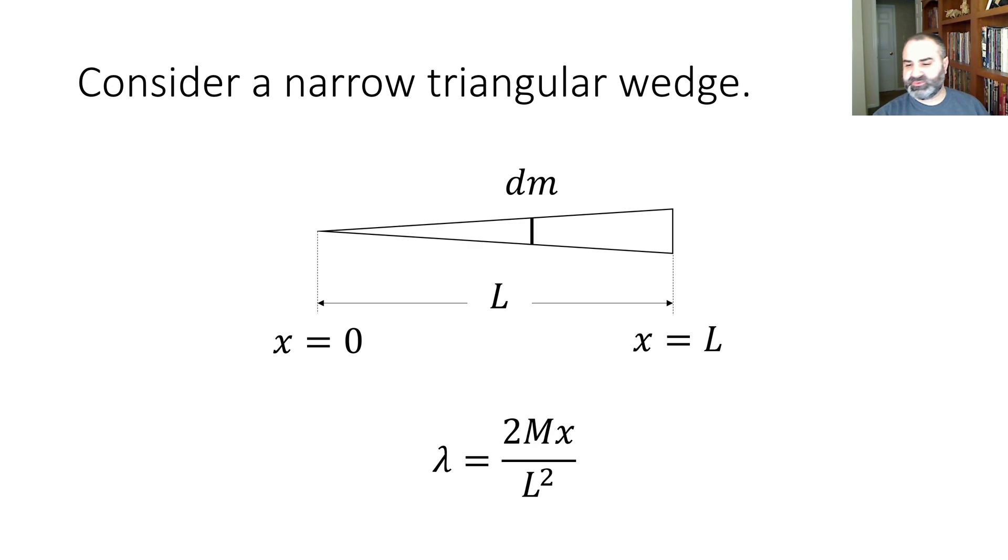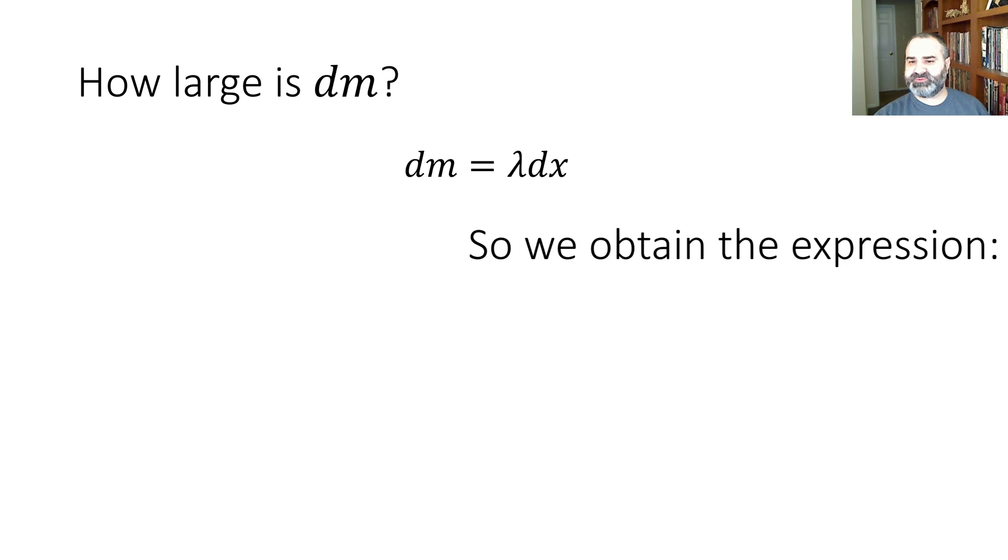So what's dm look like? dm is simply going to be the mass per unit length times the length of that little segment. And so dm is lambda dx. That gives us the expression that the center of mass is 1 over the mass of the rod times the integral over the rod of x times this term, which you'll recognize as lambda, times dx. So this is the dm, lambda dx.